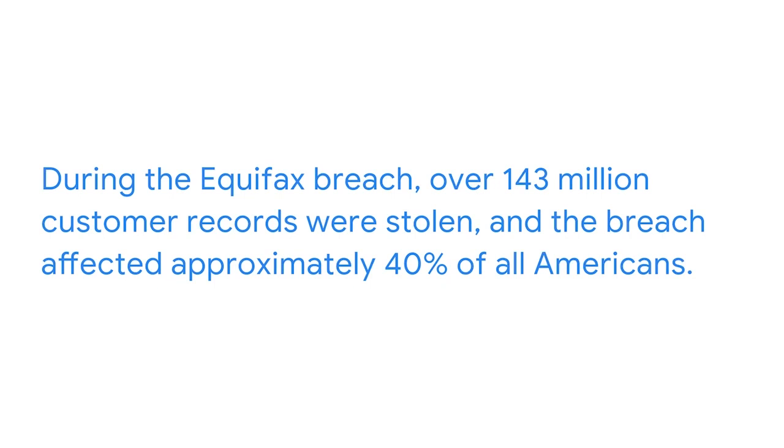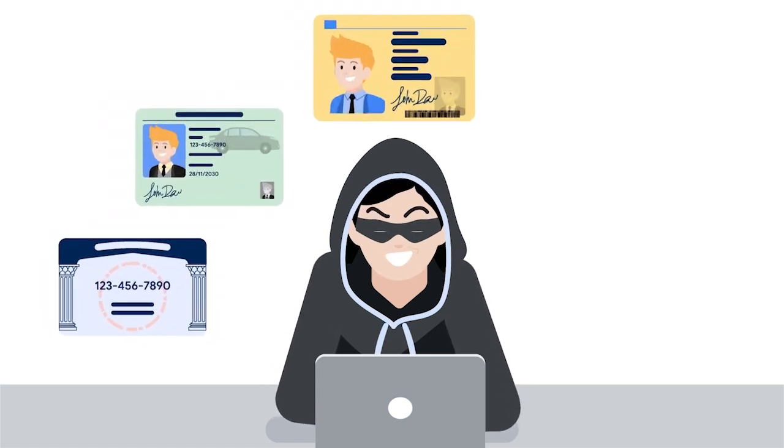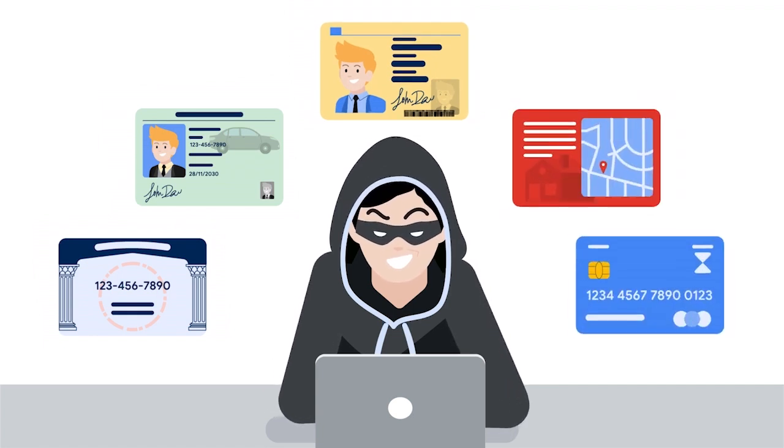In 2017, attackers successfully infiltrated the credit reporting agency Equifax. This resulted in one of the largest known data breaches of sensitive information. Over 143 million customer records were stolen, and the breach affected approximately 40% of all Americans. The records included personally identifiable information including social security numbers, birth dates, driver's license numbers, home addresses, and credit card numbers. The breach occurred due to multiple failures on Equifax's part — it wasn't just one vulnerability that attackers took advantage of, there were several. The company failed to take the actions needed to fix multiple known vulnerabilities in the months leading up to the data breach.